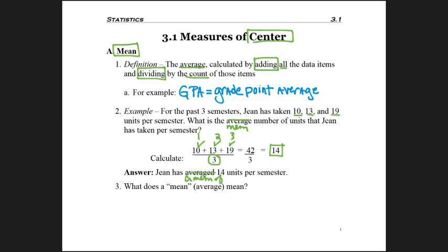But now that we know how to calculate it, what are we saying? What does our mean mean? Well, one way of looking at it is it is the value every item would be if they were all the same, so if they were all identical.